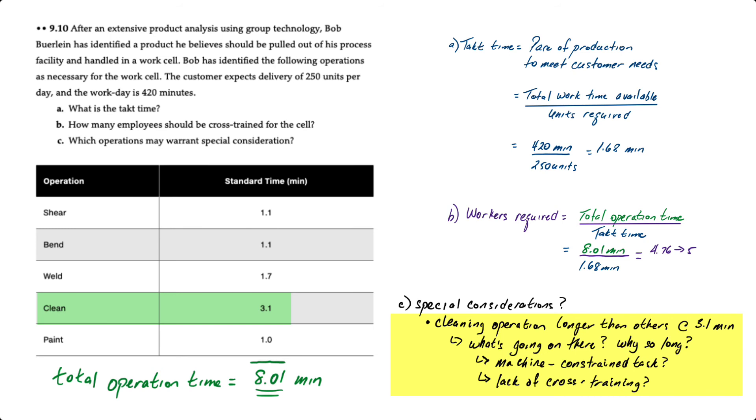Is there a machine constraint task? Is there a lack of cross-training or something like that? So this is something an operations manager would want to pay more attention to in order to help develop a nice smooth pace of production.